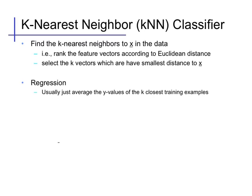Then, using these k-closest points, we can use them to make a prediction. For regression, we usually just average the y-values, i.e., the target values, associated with those k-closest examples.